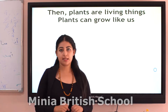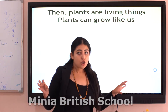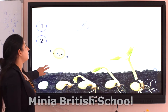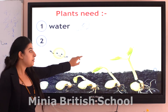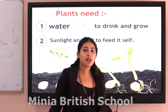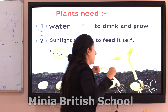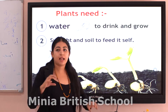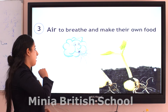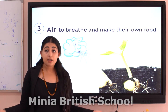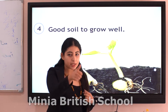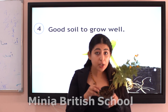Plants are living things, but plants need things to stay alive like us. Number one: plants need water to drink. Number two: plants need sunlight and soil to feed itself — leaves can make food from sunlight. Number three: plants need air to breathe like us. Number four: plants need good soil — like this soil, can you see? Plants need good soil to grow in.